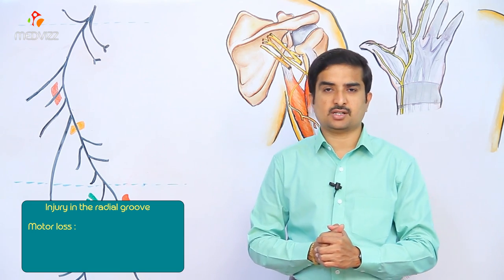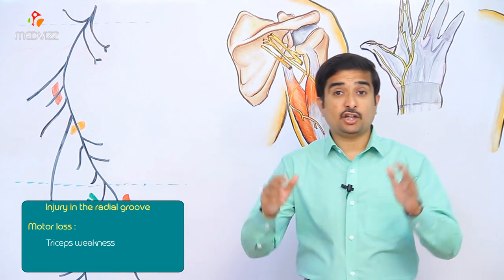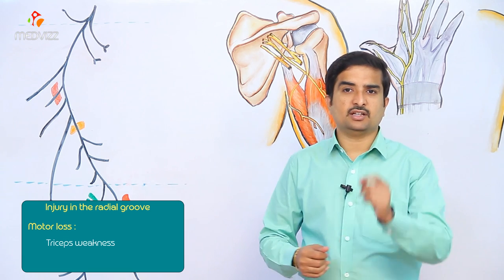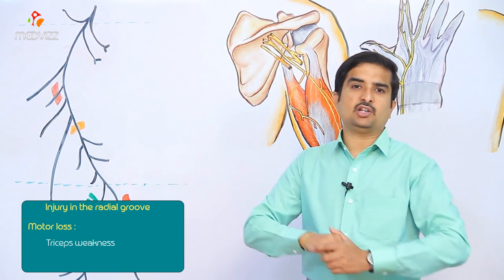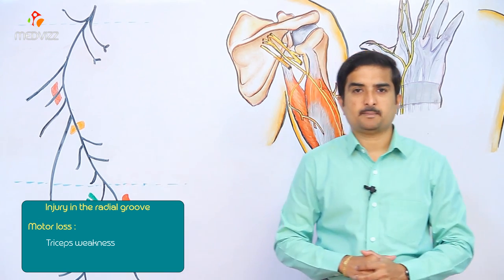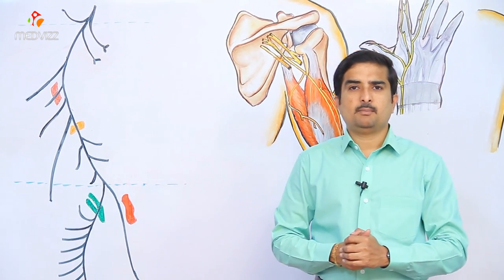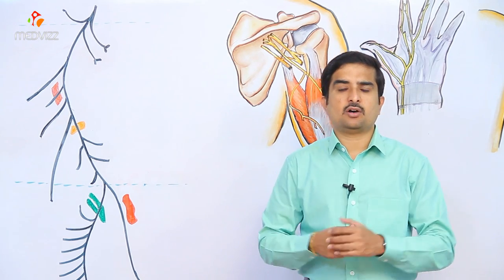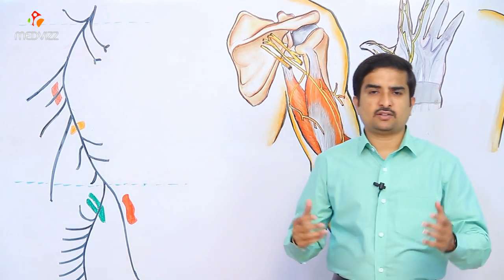When the radial nerve is injured at the spiral groove, the triceps brachii may be weakened but is not paralyzed, because branches to the long and medial heads of the triceps arise proximal to the radial groove. The muscles of the posterior forearm are most affected. The patient is unable to extend at the wrist and fingers, and unopposed flexion of the wrist — wrist drop — occurs.